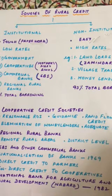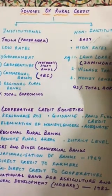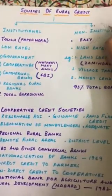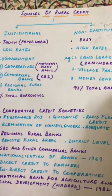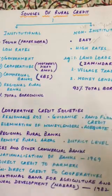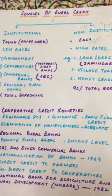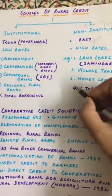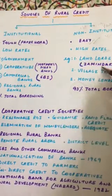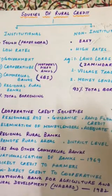During the first Five Year Plan, borrowing was mainly from non-institutional sources because it was easily available. However, the high rate of interest led to a lot of debt traps — farmers were unable to repay the money they had borrowed. Borrowings from non-institutional credit were as high as 93 percent during the first Five Year Plan.